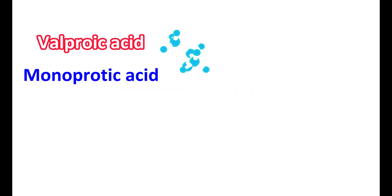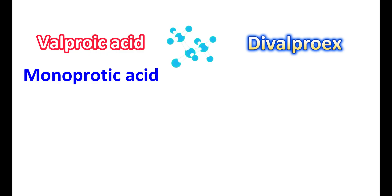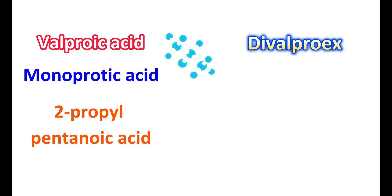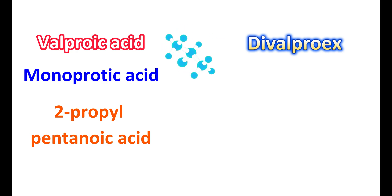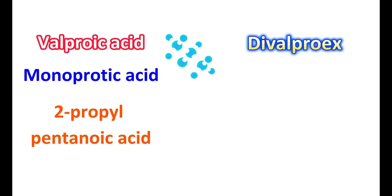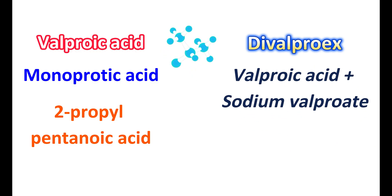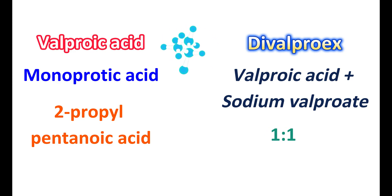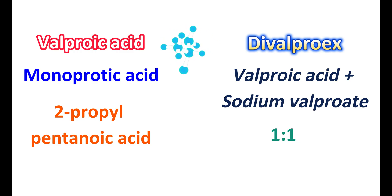Chemical nature: Valproic acid is a monocarboxylic acid — specifically, it is chemically 2-propyl pentanoic acid. Because of its carboxylic acid group, it can easily form a sodium salt and can be converted into sodium valproate by reacting with sodium hydroxide. Divalproex sodium contains both valproic acid and its sodium salt — sodium valproate — in a 1:1 ratio, and this mixture is prepared into a tablet specially coated to produce either delayed-release or extended-release formulations.